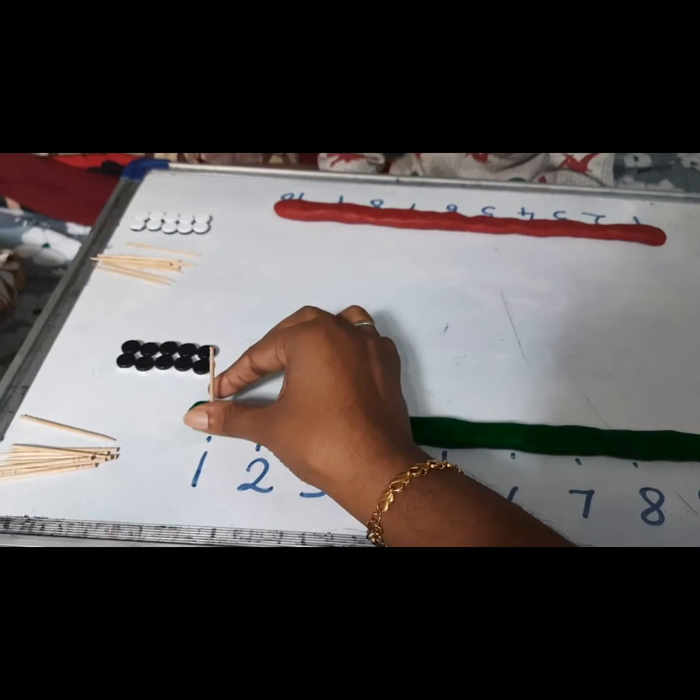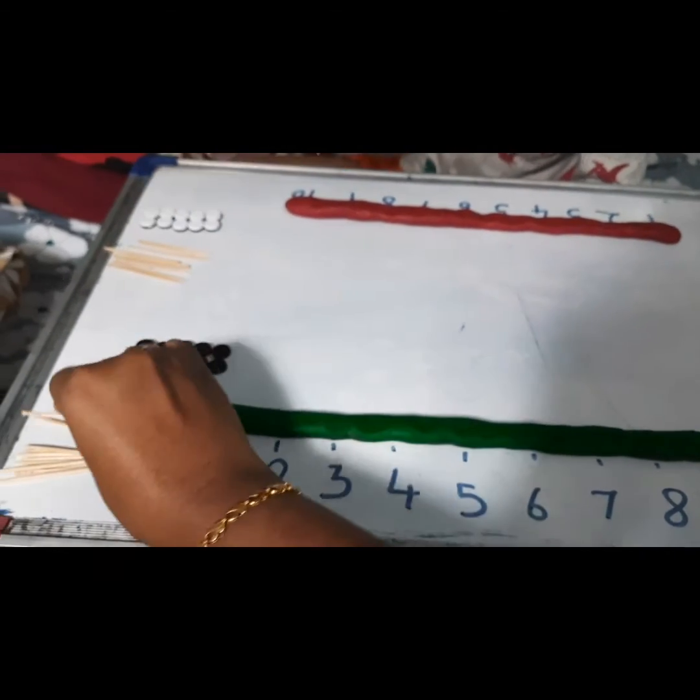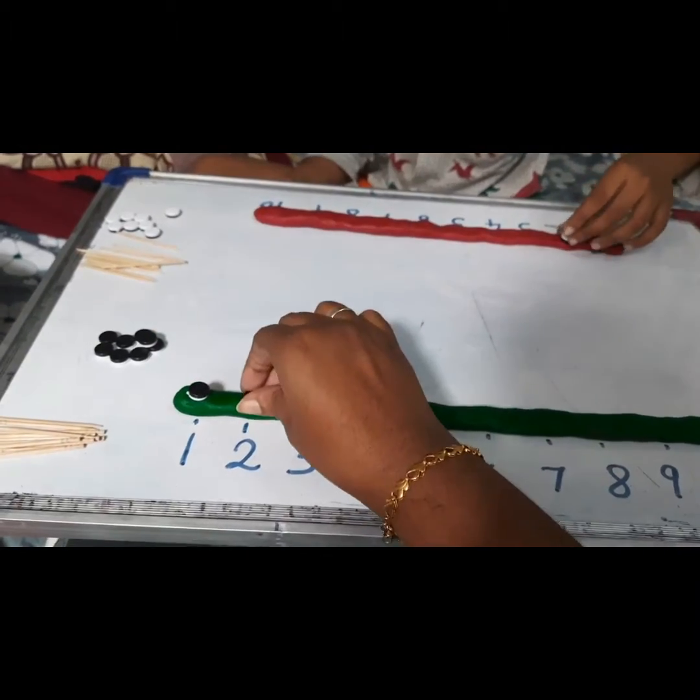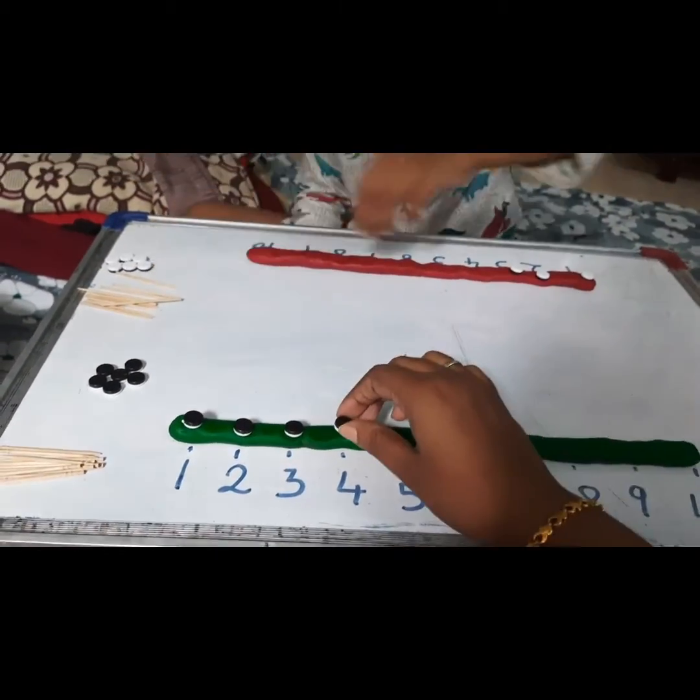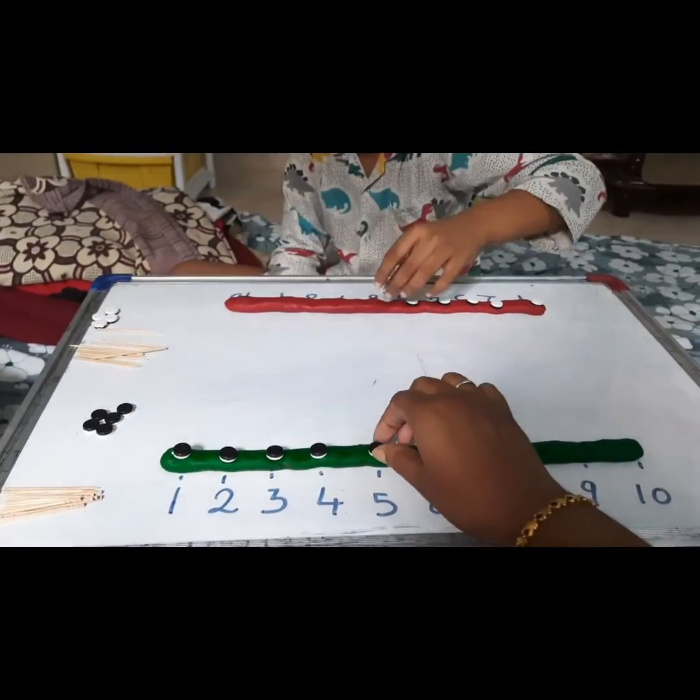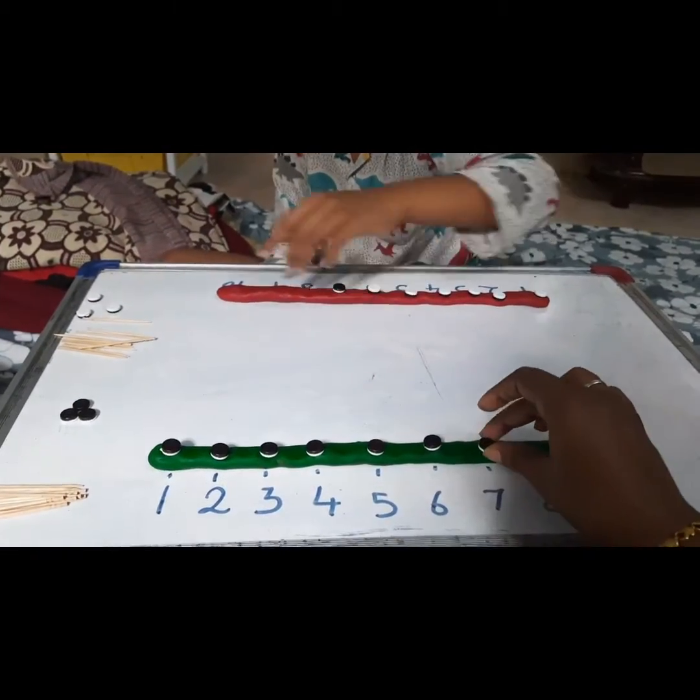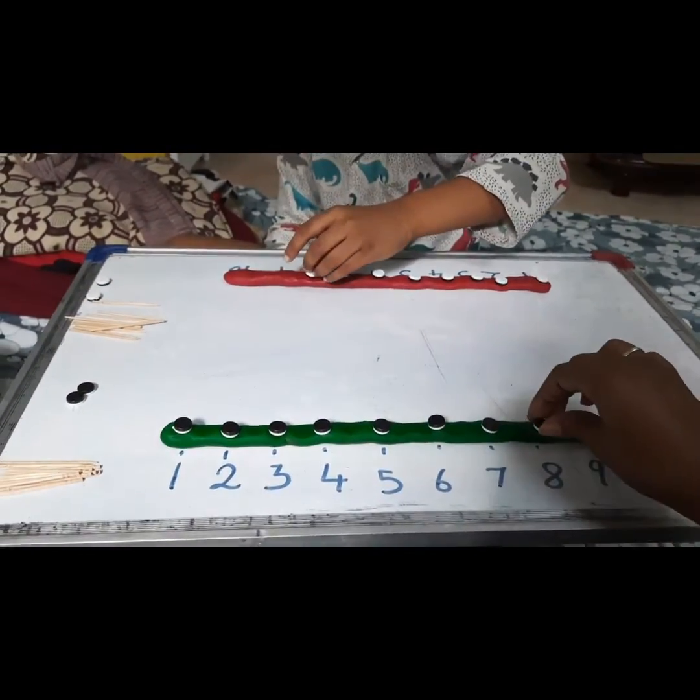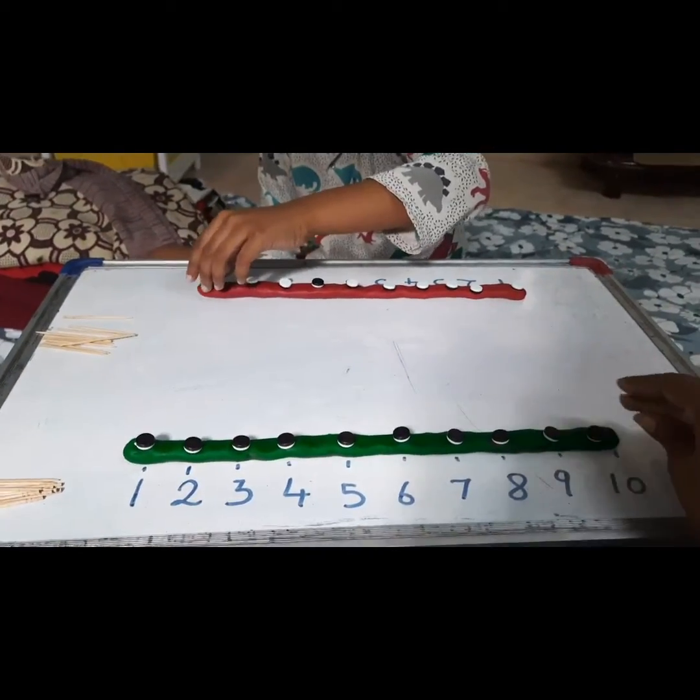One, two. While keeping, also make the child count. Three, four, five, six, seven, eight, nine, ten.